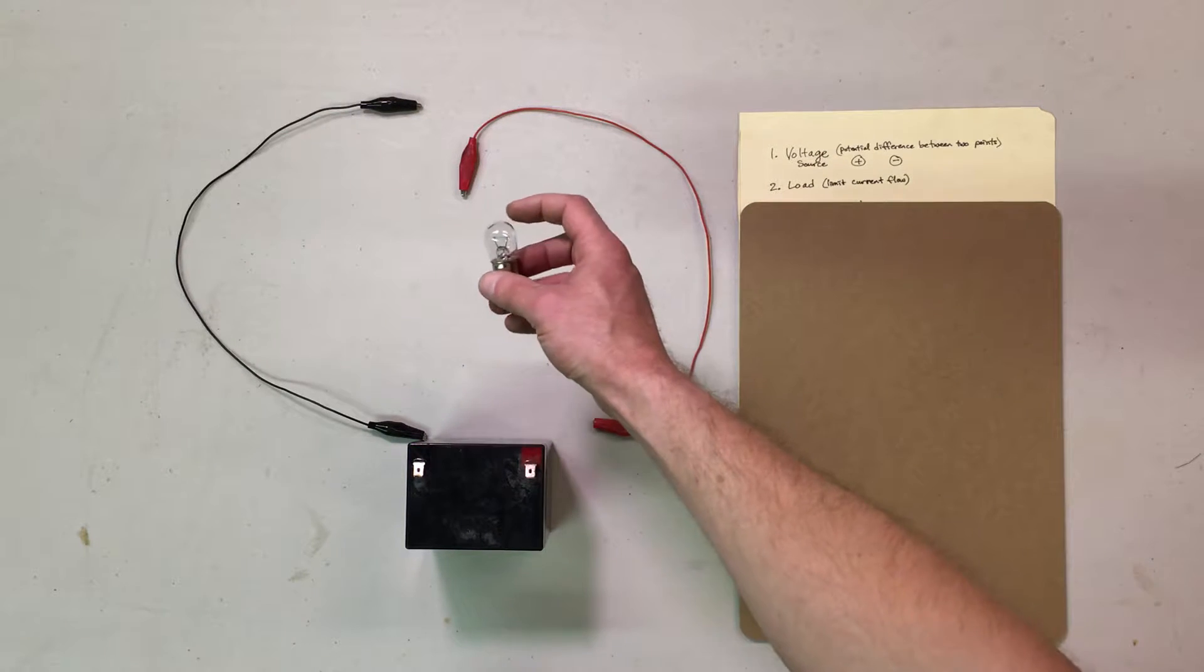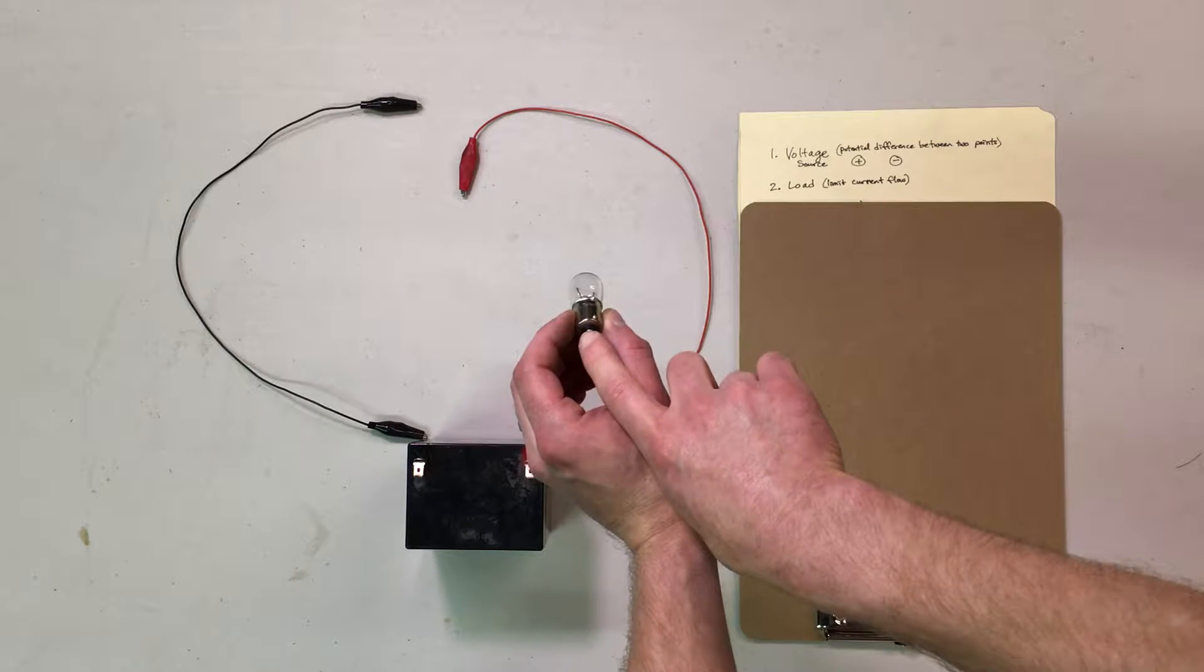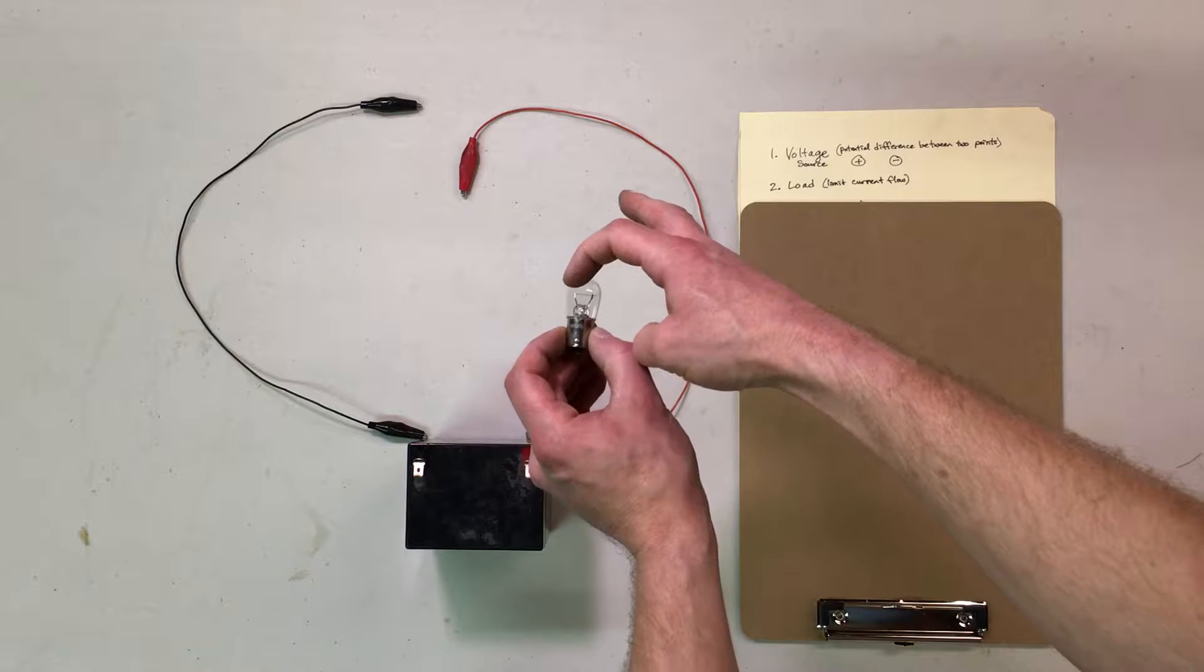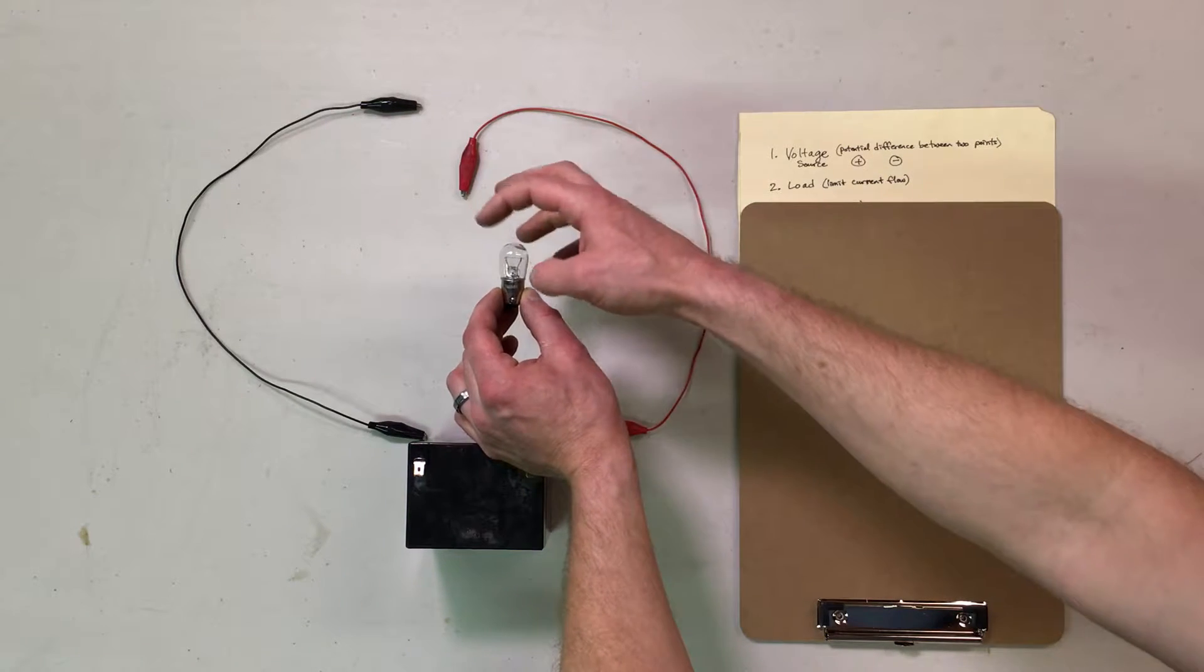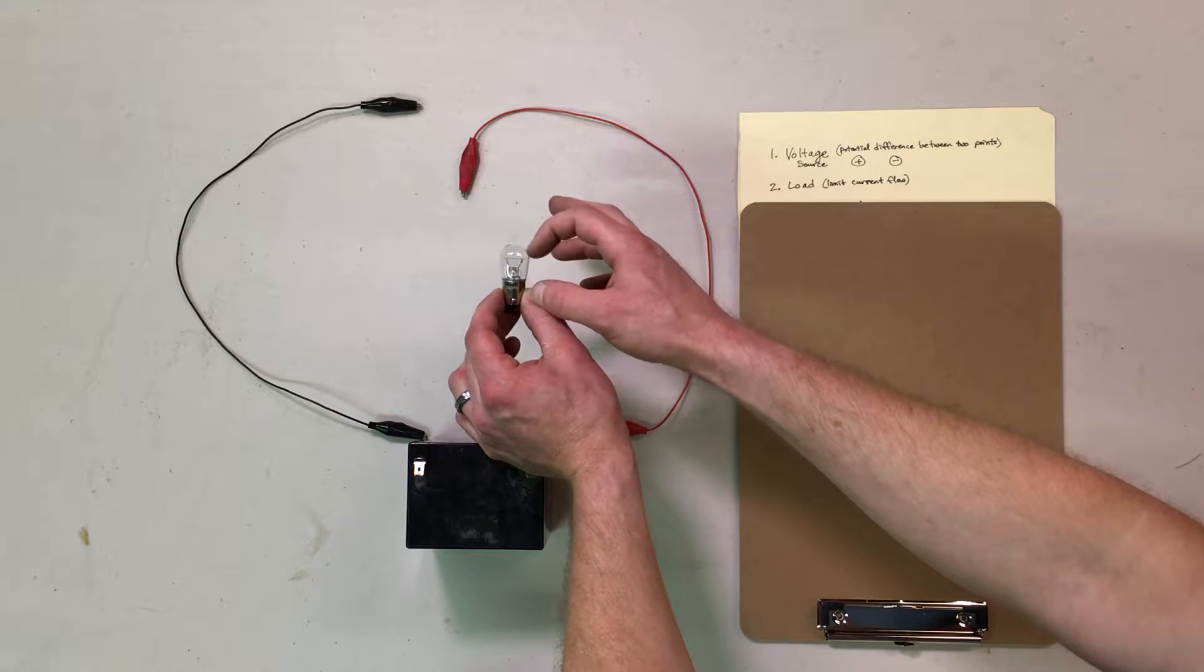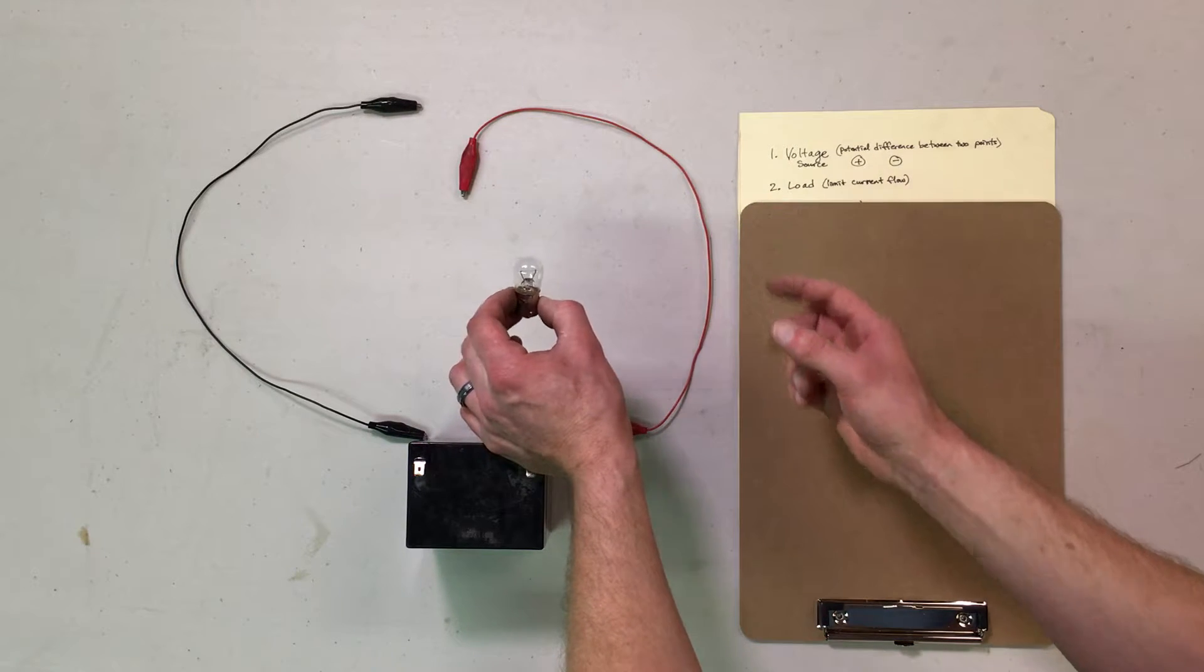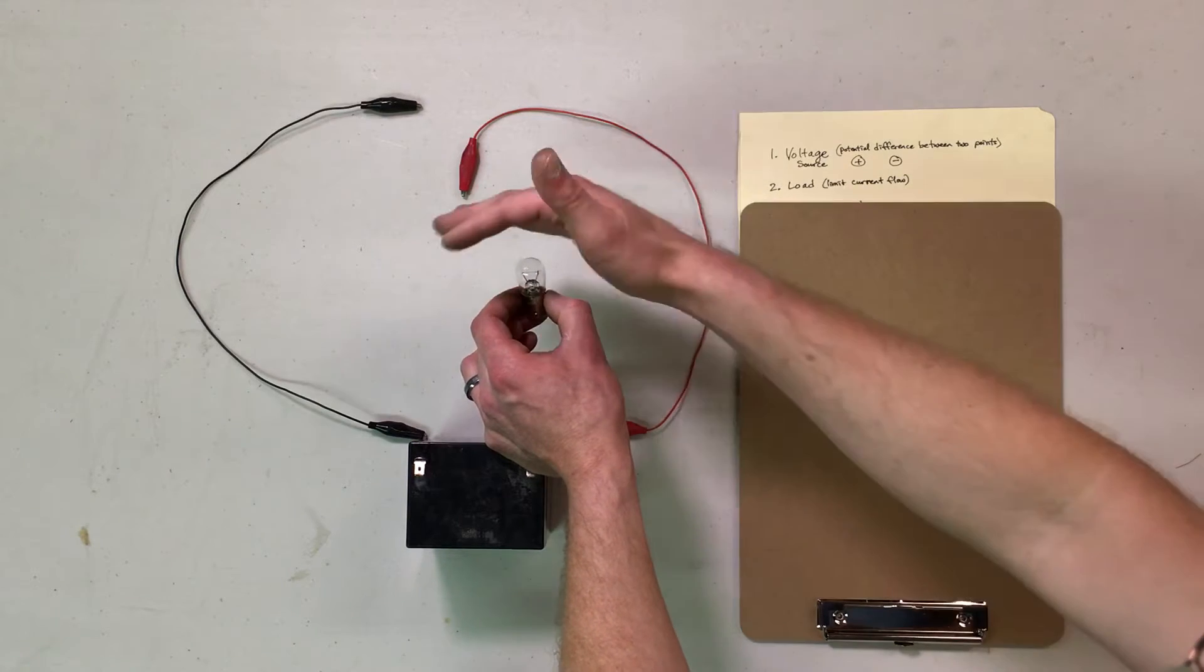I'm going to use a light bulb. This is a 12-volt automotive light bulb. Usually the positive connects here. It goes through to one of these wires and then it goes across a very fine twisted wire that is called the filament. That filament is a resistor. It resists the flow of electricity. So it makes it hard for the electricity to get through.